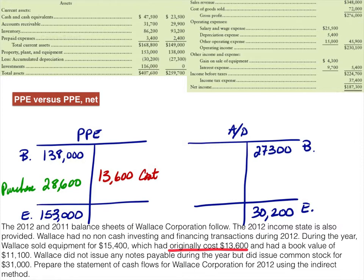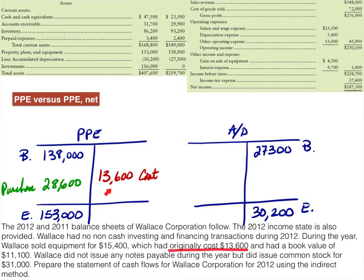Once we know the cost of what we sold, we can now find our purchases amount because we know that $138,000 less $13,600 does not equal $153,000, so we must have purchased something. We can check ourselves: $138,000 plus purchases of $28,600 minus the sale of one asset at $13,600 leaves us with an ending balance of $153,000.